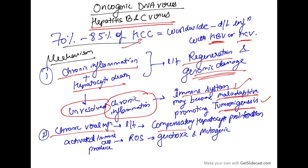The chronic viral infection leads to compensatory hepatocyte proliferation. Additionally, the activated immune cells — present because of chronic inflammation — produce some reactive oxygen species, and these are genotoxic and mutagenic.